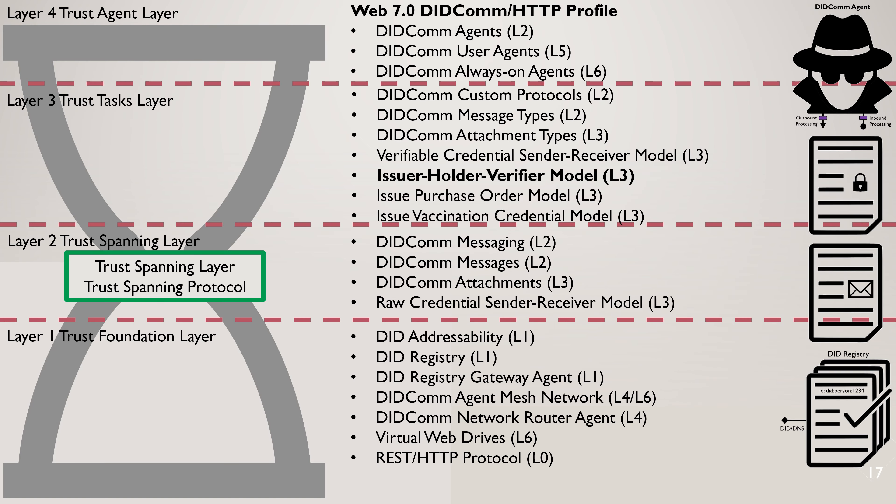The issuer-holder-verifier model lives in Layer 3 of the Web 7.0 Trust Spanning Layer Framework. It is a derivation of the verifiable credential sender-receiver model, which is also in Layer 3. The verifiable credential sender-receiver model in turn is dependent on the raw credential sender-receiver model in Layer 2.